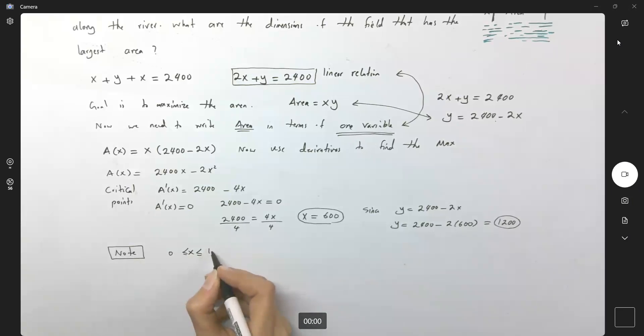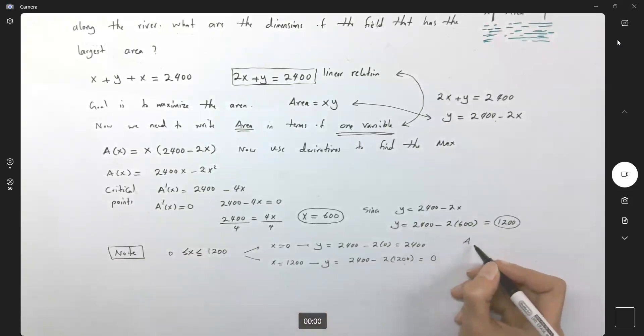x is between zero and 1,200. So it means that we have some values that x is restricted to. If x is equal to zero, then y becomes 2,400 minus 2 times zero or 2,400. And if x is 1,200, then y becomes 2,400 minus 2 times 1,200 which is zero. So note that in either case, the area becomes zero.